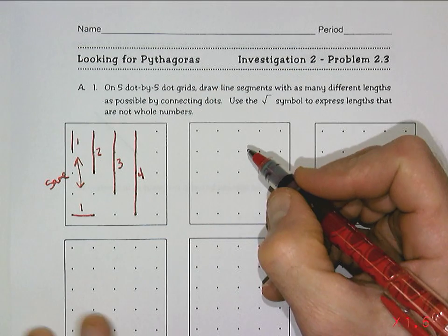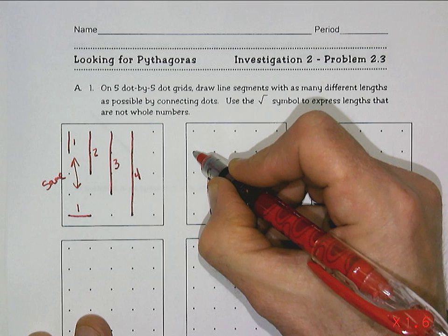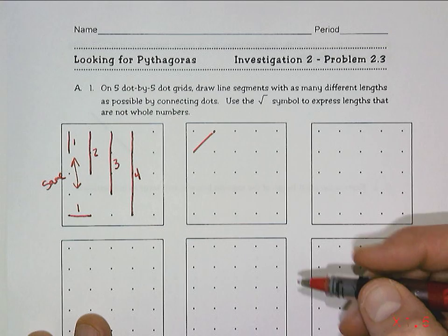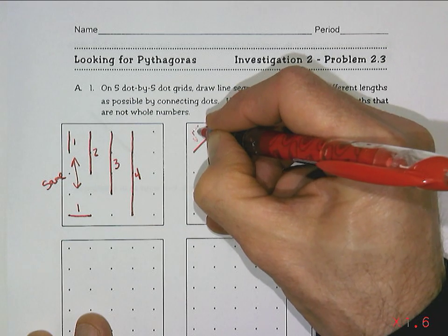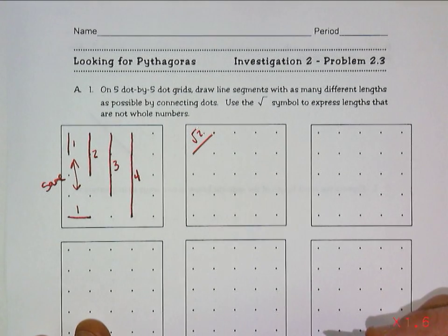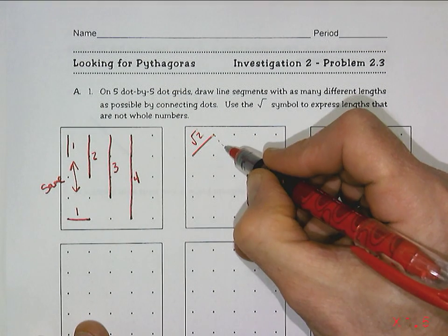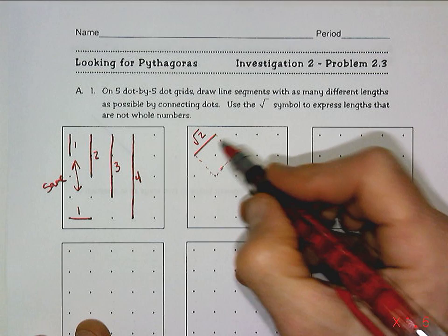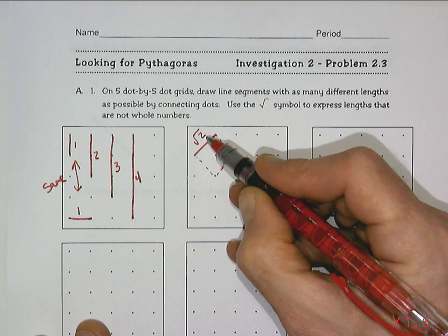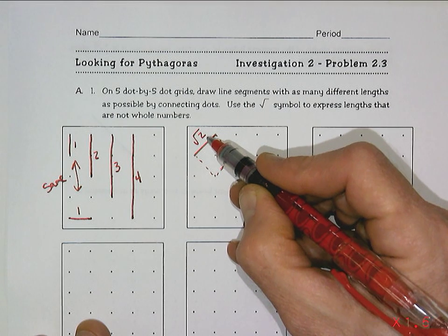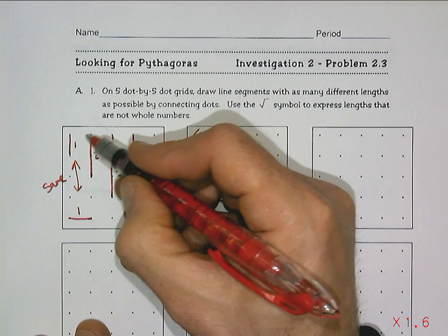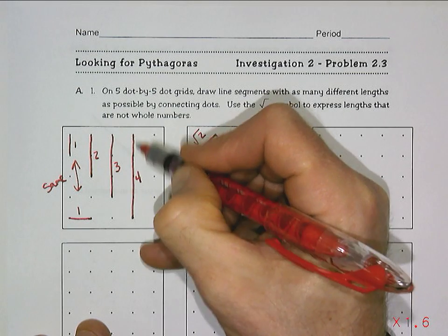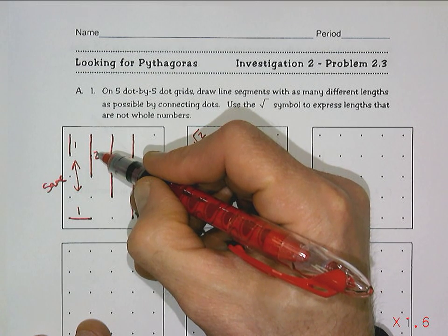But what we can also do is start doing diagonal lengths, so this one here. So if I did that diagonal length, I know the length of that line is the square root of 2. And you might be saying, well, how do you just know that? Well, I know it because it's a part of this square. If I were to actually make the square that it's a part of, the area of that square is two square units, so the side length has to be the square root of the area.